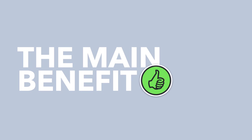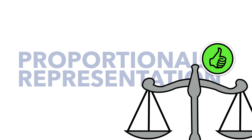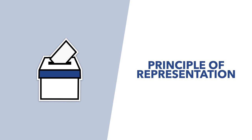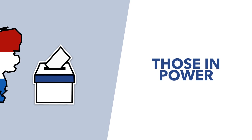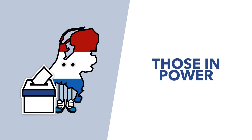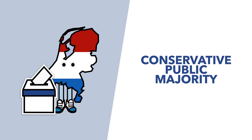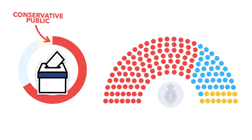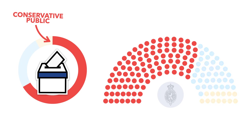The main positive from this PR system is fairness. Democracy is built on a principle of representation, which means that the people in power should represent the opinion of the electorate. So if people in a country are majority conservative, the composition in parliament should reflect that accordingly. In this regard, PR scores very well, as the division of seats almost exactly follows the political preference of the people.